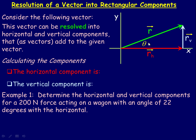Now, this is an important angle — it's the angle the vector makes with the horizontal, the x-axis. In order to calculate the horizontal component and the vertical component, we're going to use trigonometry.